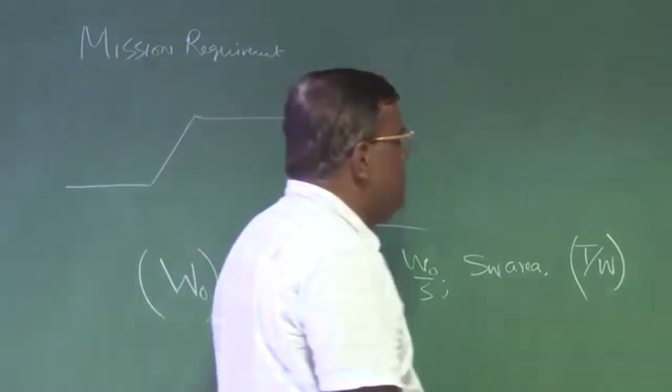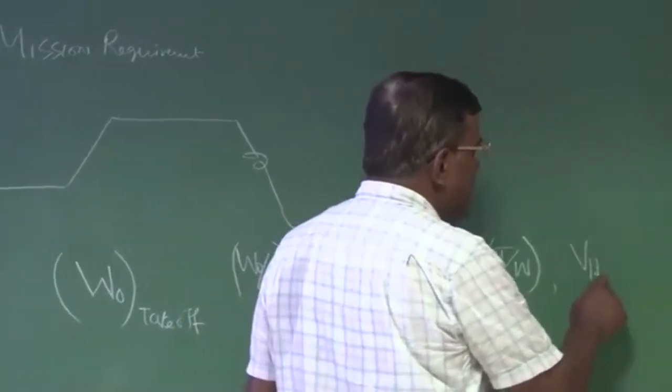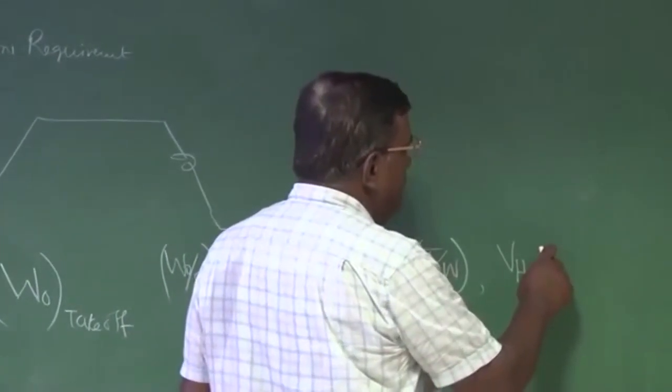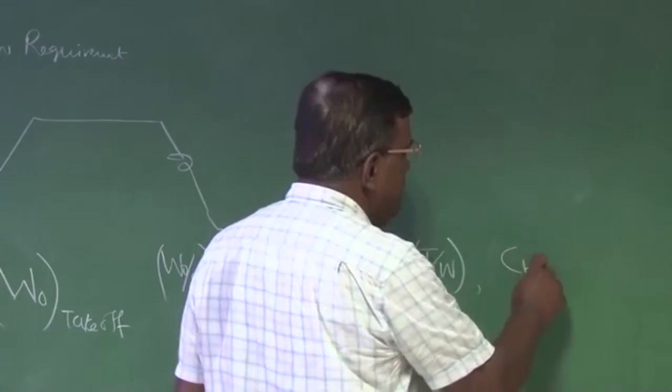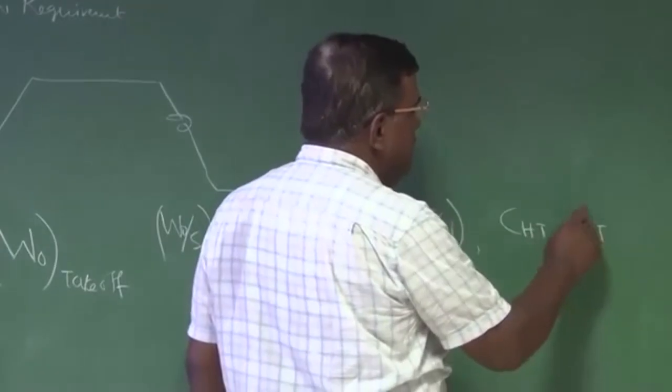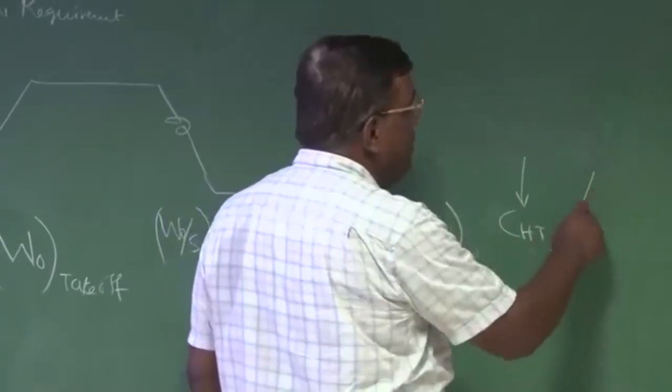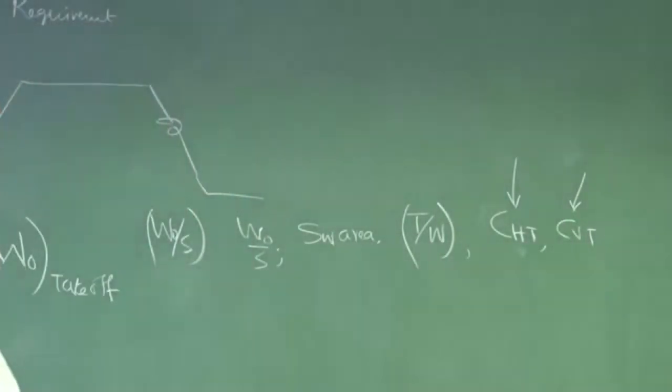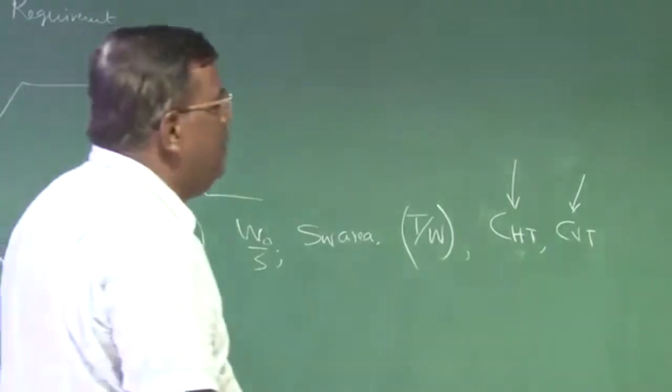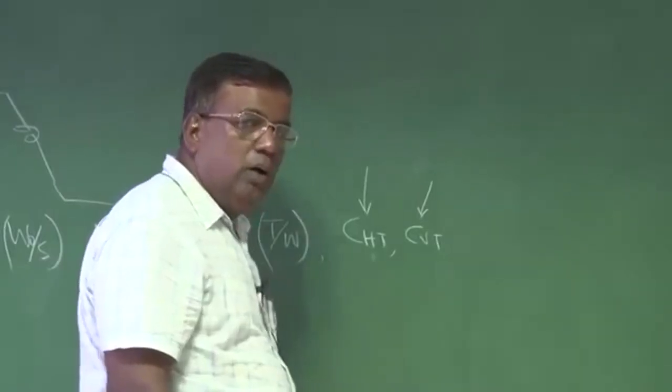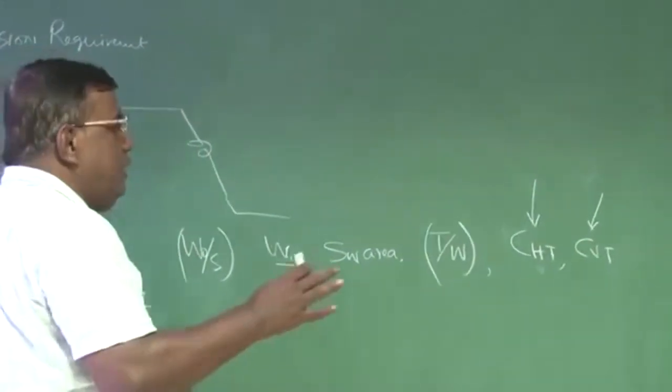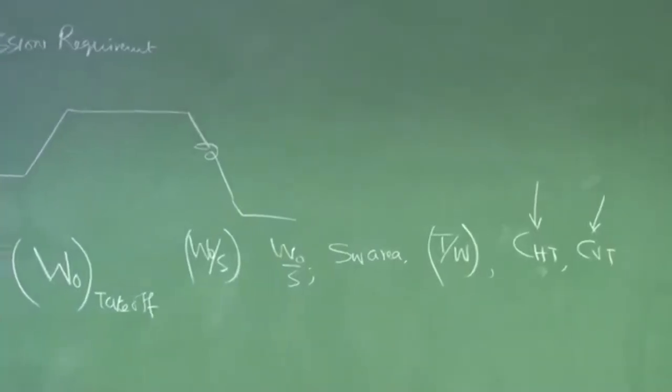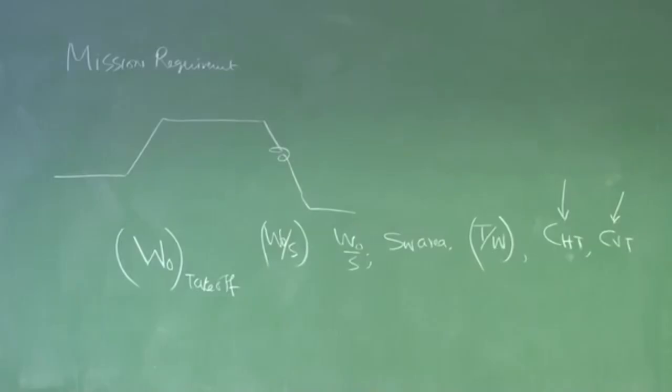After that, we tried to understand how much tail volume ratio is required - CHT and CVT, tail volume ratios for horizontal tail and vertical tail. We also talked about roughly how much the elevator size will be, and some discussion on aileron flaps. This will help you in just drawing a sketch, because after that, we will do the analysis.